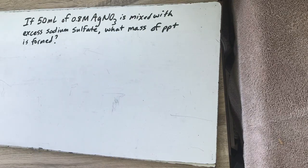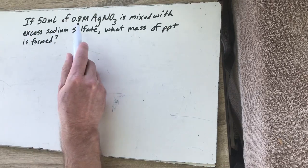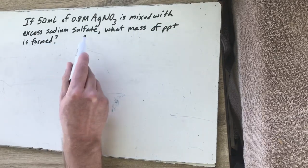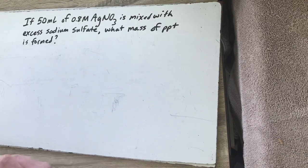We're always going to start with reading this situation and see if we can write a balanced equation to represent that. We're going to turn a paragraph into an equation. This says we've got 50 milliliters of 0.8 molar silver nitrate and it's mixed with excess sodium sulfate. So the first thing we want to do is write those two things out and then make a balanced equation.